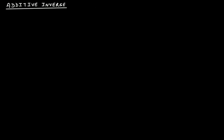Let's say we have an integer a. If it is asked what can we add to this integer a so that the final result is zero, you will say that if I add minus a to this, then it will become a minus a, and therefore this will be equal to zero. Here, a is any arbitrary integer, and if you add minus a to a, this will become zero.